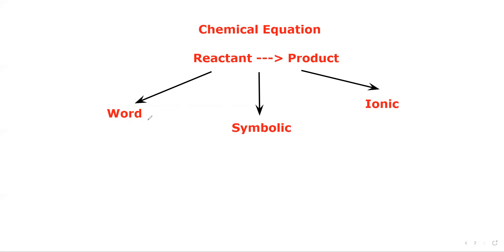In a word equation, we simply write the names of the substances that react and the substance which is formed. In a symbolic equation, we use the actual symbol for each element or compound used as a reactant or formed as a product. In an ionic equation, we write the changes that happen for the ions. We will discuss each of these — starting with word equation, then symbolic, then ionic.